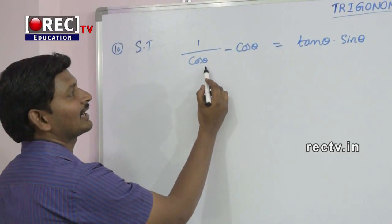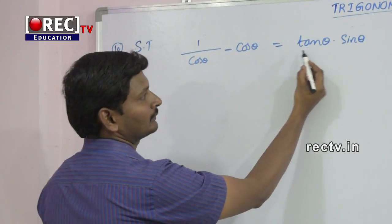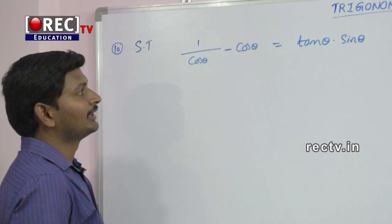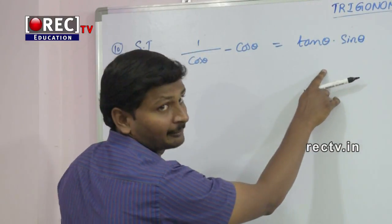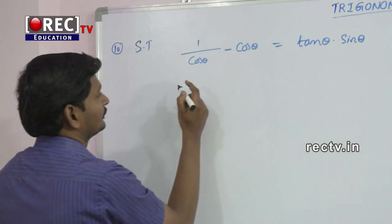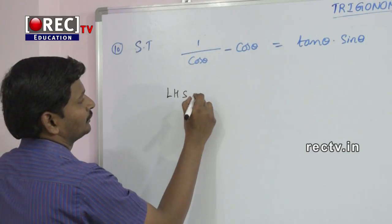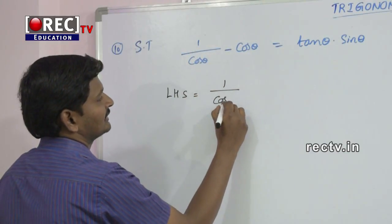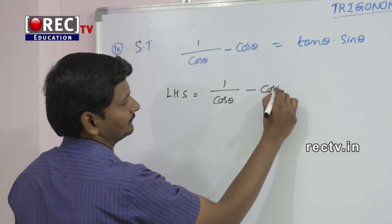Prove that 1 by cos theta minus cos theta is equal to tan theta into sin theta. LHS is equal to 1 minus cos theta minus cos theta.